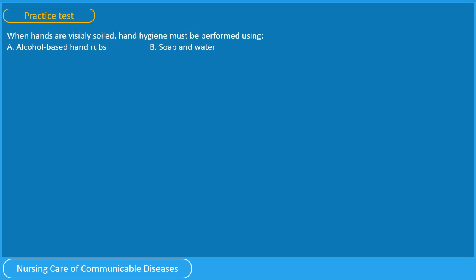Pause this video, gather your thoughts, and when you are ready, let us have a practice test. For the first question: when hands are visibly soiled, hand hygiene must be performed using A. Alcohol-based hand rubs, or B. Soap and water. You have 5 seconds.